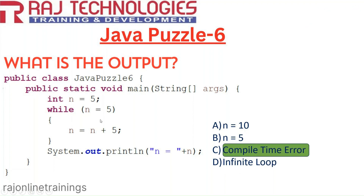But in Java, the condition must always be boolean — whether you use an if condition, while loop, do-while loop, or for loop. In our example it uses integer type, and since integer is not accepted in conditions in Java, the result is a compile time error. That's about this puzzle. We'll keep adding new puzzles in the next videos — thank you, please subscribe, like and share.